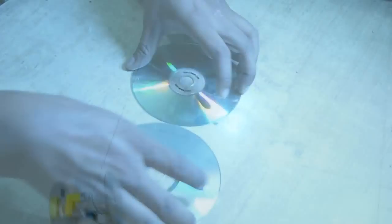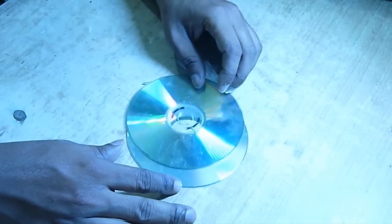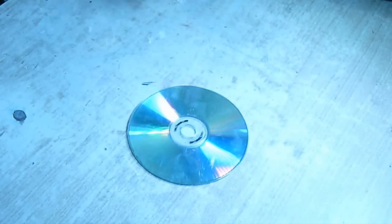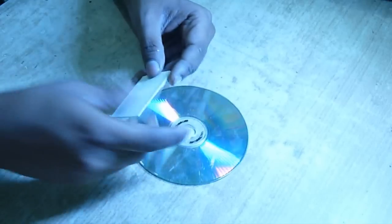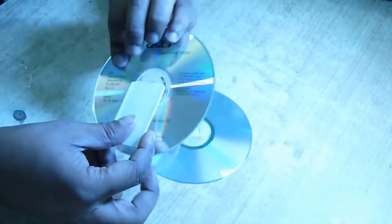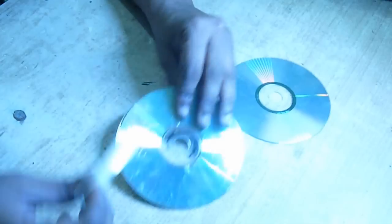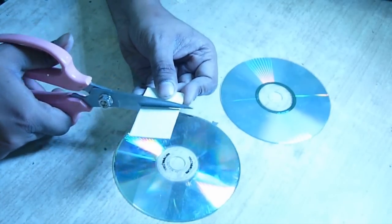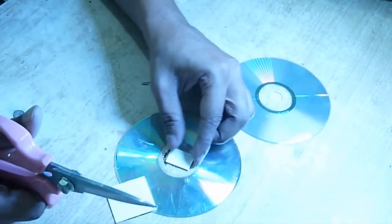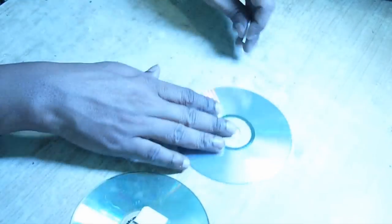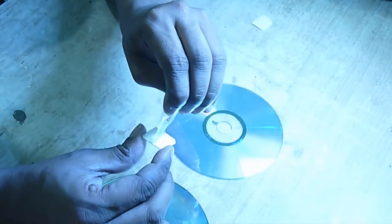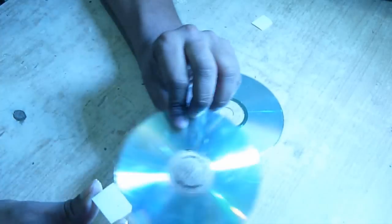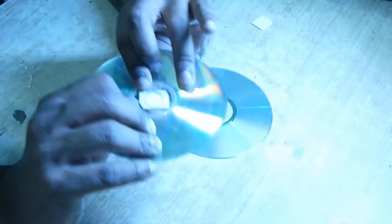Now, how to make it. First, you need two old CDs. You need two small pieces of plastic to close the central hole. Use super glue to stick the pieces of plastic there like this.